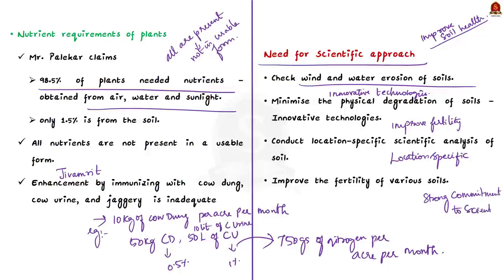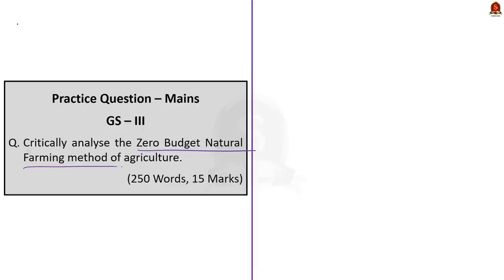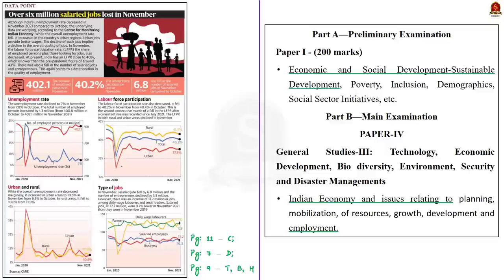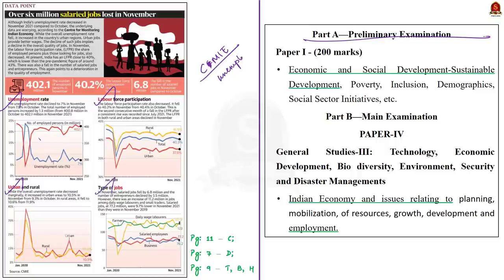So in this article we saw what is zero budget natural farming, its components, who formulated the technique, the shortfalls and flaws, and finally what can be done. Our next discussion is based on a data point focusing on employment status, based on the survey by the Center for Monitoring Indian Economy — the CMIE — mainly covering unemployment rate, labor force participation rate (LFPR), and rural and urban employment.